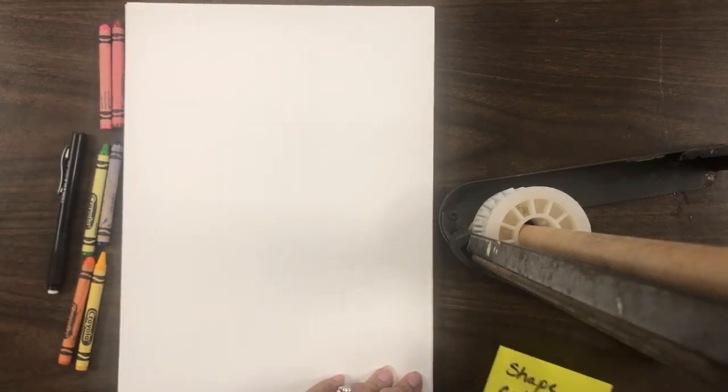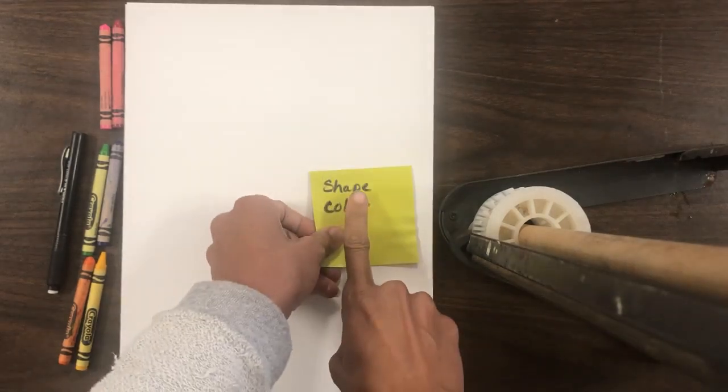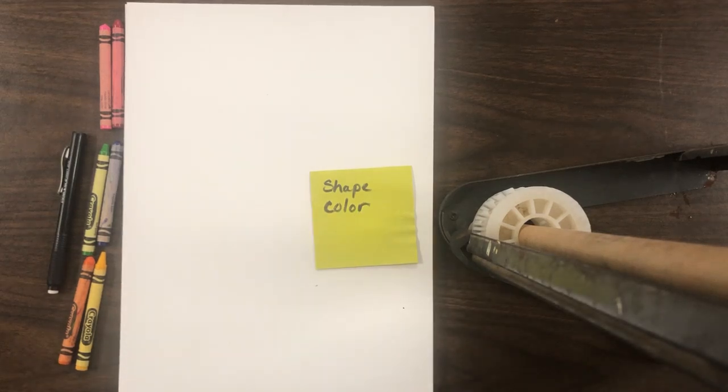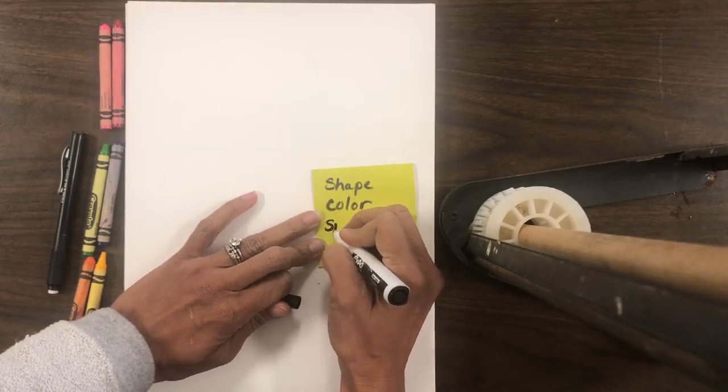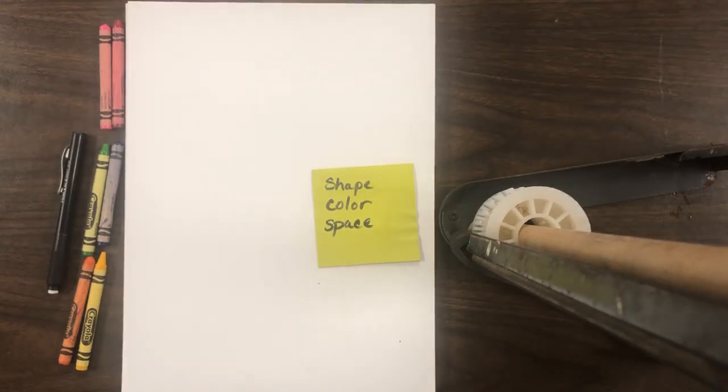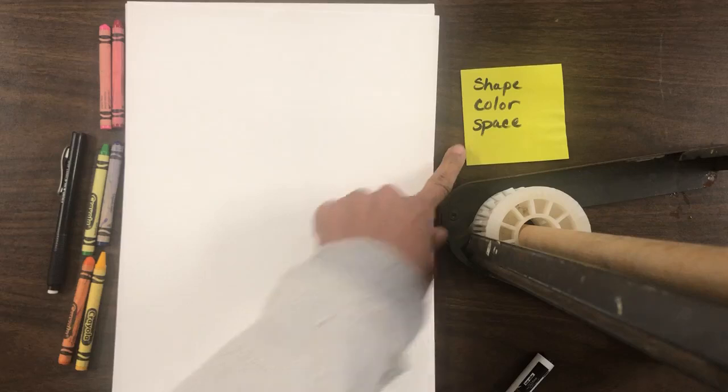And some things that I want you to remember are our elements of art. You're going to be using shape. You're going to be using color. And you're also, one thing I forgot to put on here is space, because that is an element of art as well. So those are our elements of art that I want you guys to think about.